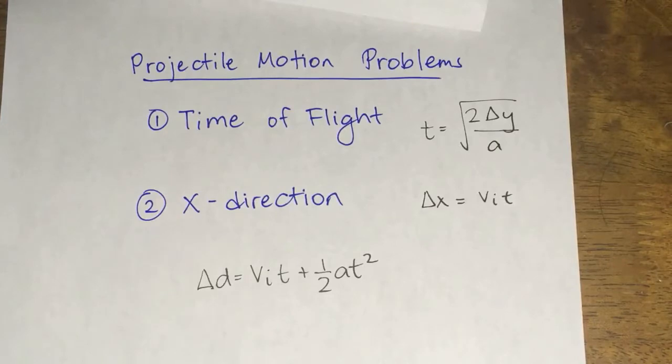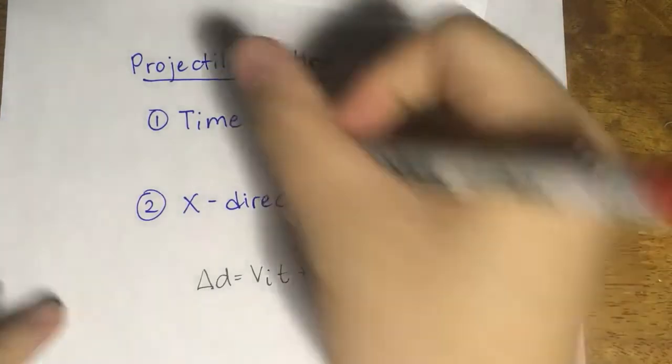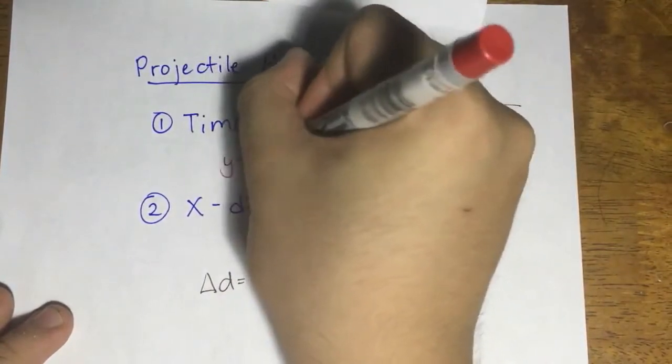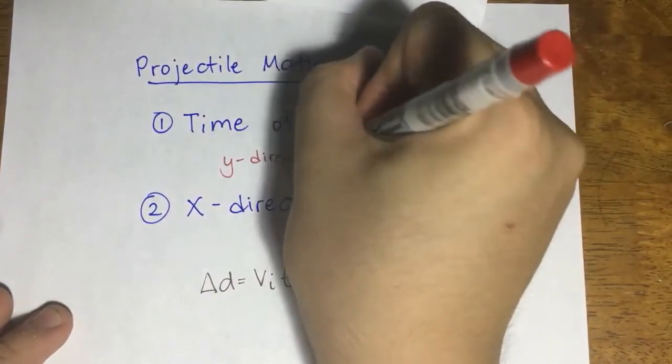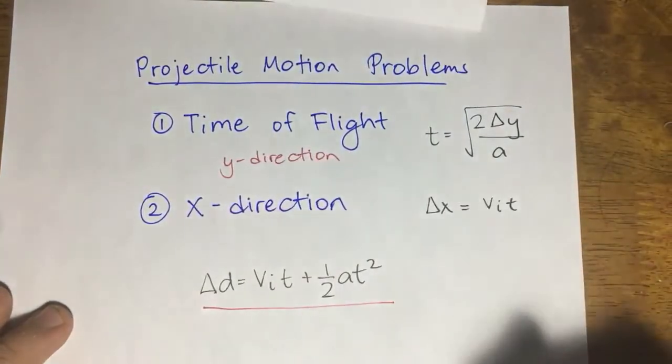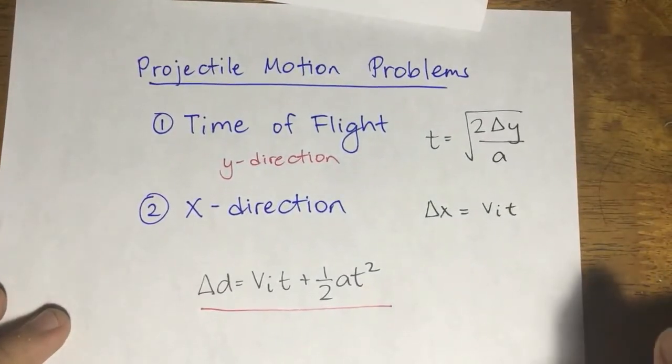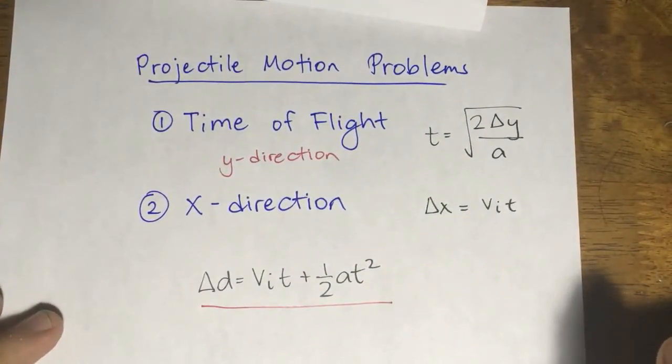The first is always to find the time of flight. This is much better done in the y direction. The equation that you're going to use comes from the basic kinematic equation.